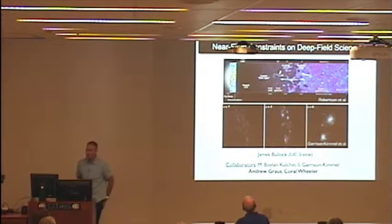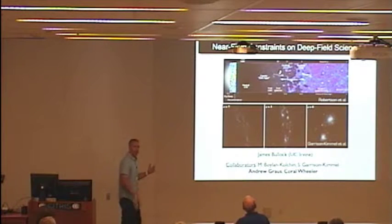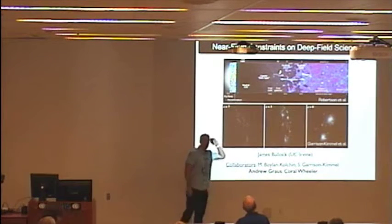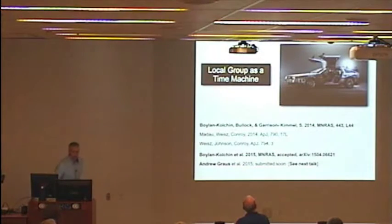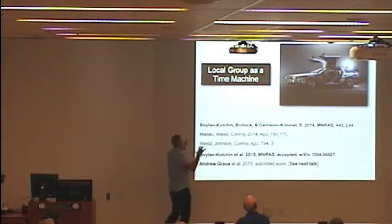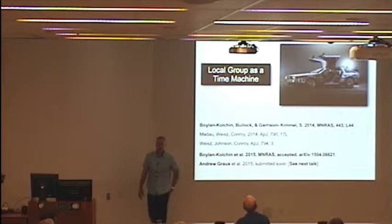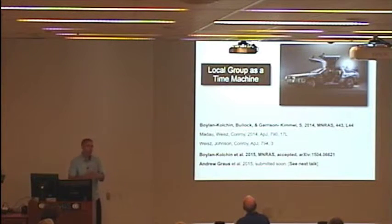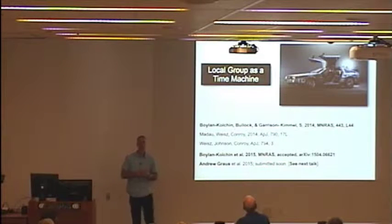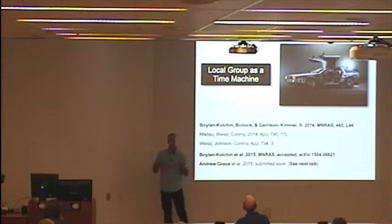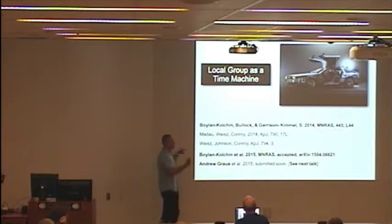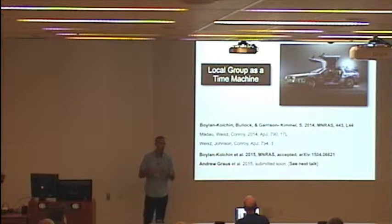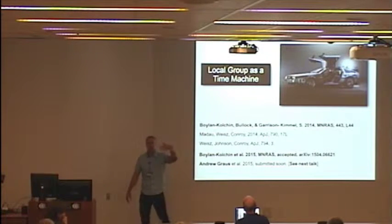So what I want to talk about is using the local group as sort of a time machine to provide constraints on the early universe that we might not be able to probe directly with searches. So this talk is in the context of a series of papers that have come out recently where people are trying to use local group data to inform ideas about what's going on in the past and specifically relying on some incredible deep CMD work that's been done using HST to study the star formation histories of local group galaxies.